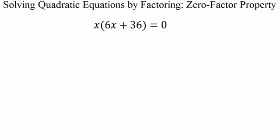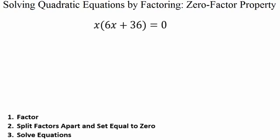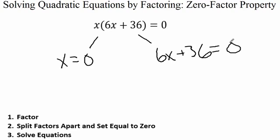Here we have another example to solve. Going through our steps: step one, factor the polynomial. This example is already factored for us — we have two factors. So we split these factors up and set them equal to zero. Here we have x equals zero, and then 6x plus 36 equals zero. On the left-hand side, it's already set equal to zero, so there's nothing to solve there.